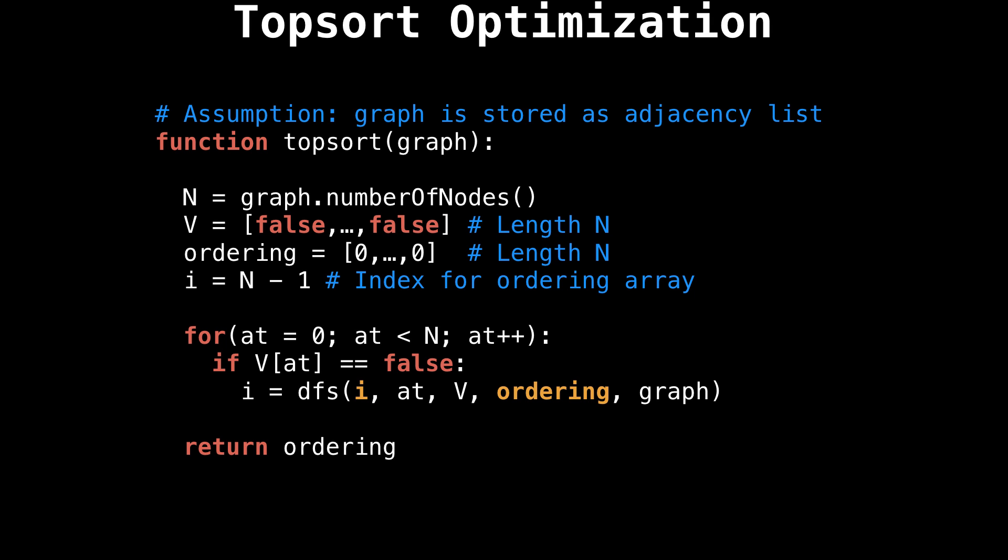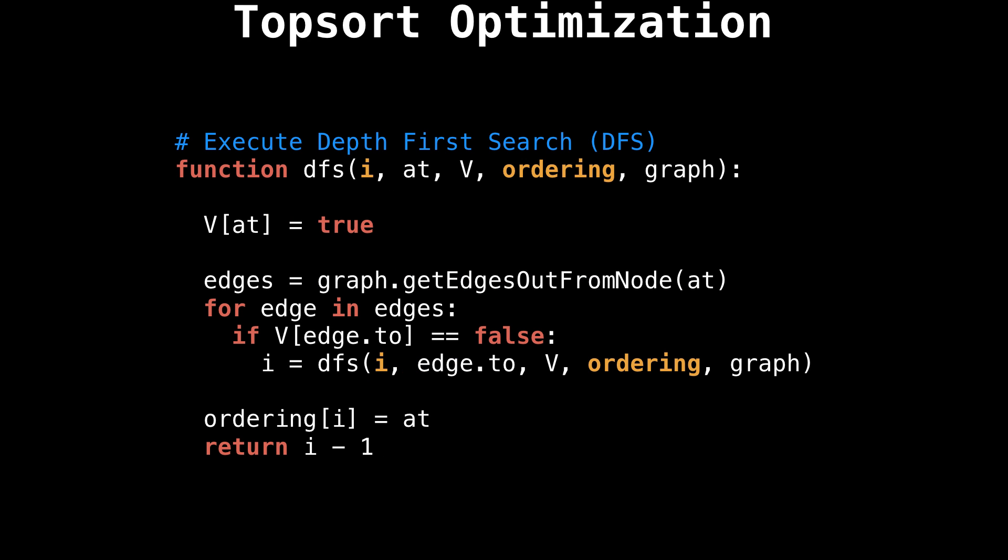Here I got rid of the unnecessary array and modify the depth first search method to return the next valid insertion position in the orderings array. Now we need to pass in the index i and the orderings array, so that it can be filled directly inside the depth first search method. Inside the new depth first search method, one thing that changed is that now we have a return value, and we're passing in some additional variables. Notice that instead of adding the current node to the visited nodes array, as we were doing before, now we simply insert that node directly inside the orderings array. The last thing to do is to return i minus one, because the index of the current insertion position is no longer index i, but index i minus one.